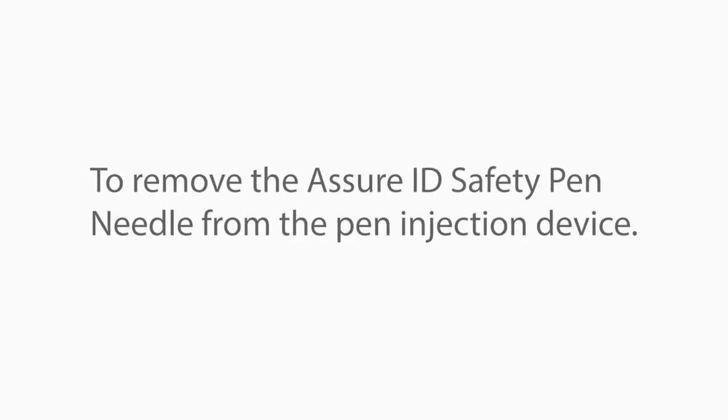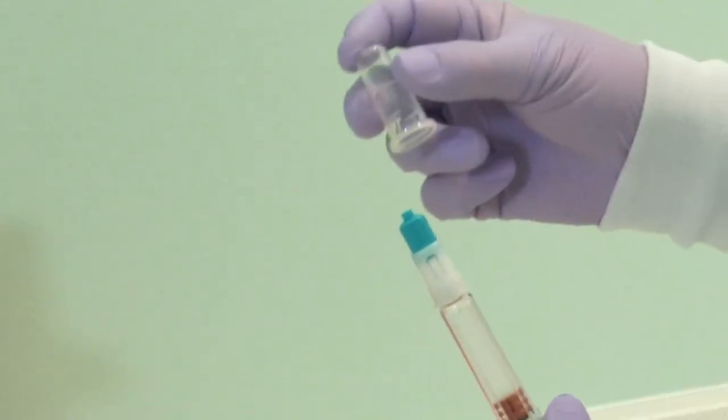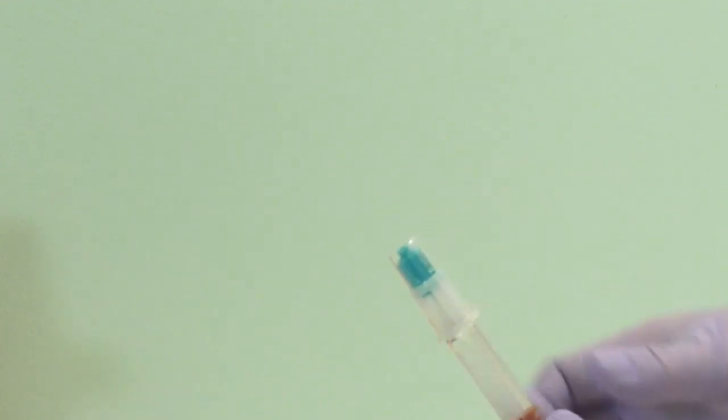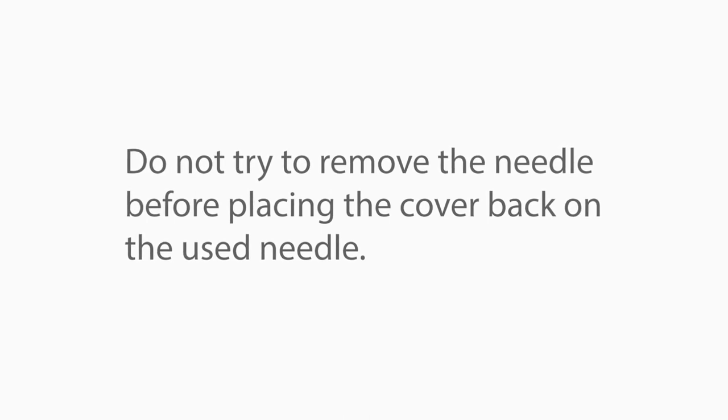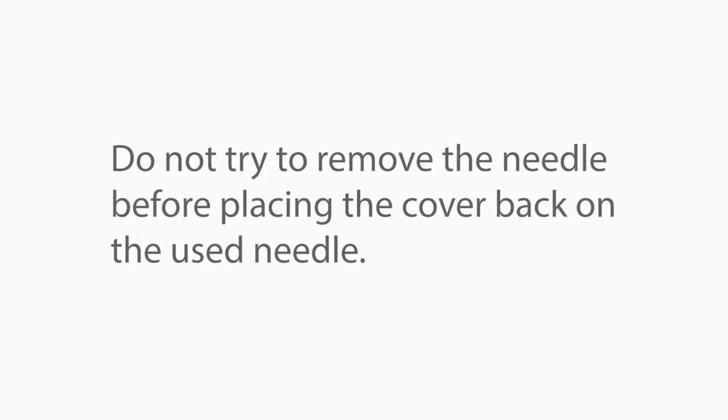To remove the Assure ID safety pen needle from the pen injection device, first attach the clear cover securely over the shielded needle by pushing the cover over the shielded needle. Do not try to remove the needle from the pen device before placing the cover back on the used safety pen needle.